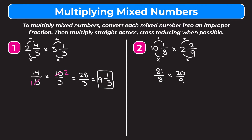We definitely want to cross reduce here because we don't want to multiply 81 by 20. We can cross reduce the 81 and the 9, and the 8 and the 20. So 81 and 9 are both divisible by 9: 81 divided by 9 is 9, and 9 divided by 9 is 1. And 8 and 20 are both divisible by 4: 8 divided by 4 is 2, and 20 divided by 4 is 5. So now we have 9 times 5 on top which is 45, and 2 times 1 on the bottom which is 2. Changing this back into a mixed number: 2 goes into 45 twenty-two times, 22 times 2 is 44 so we have 1 left over. So we get 22 and a half.